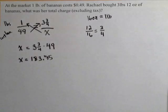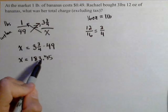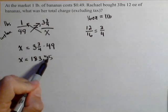Now, 183.75 dollars is quite a bit for 3 and 3 quarters pounds of bananas. Remember, we did this problem in cents. So, what we're going to want to do is round this up.